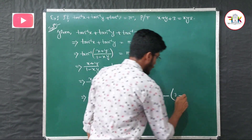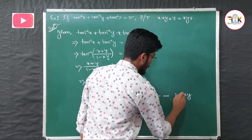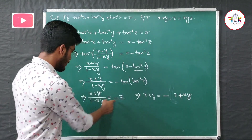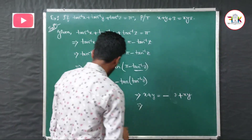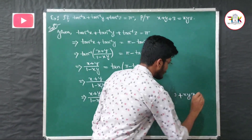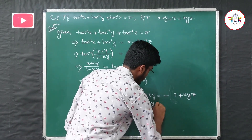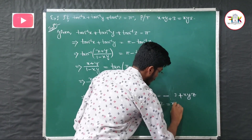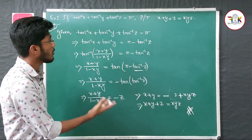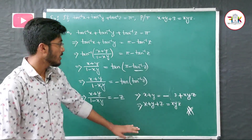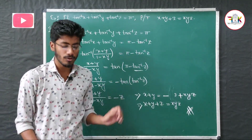Rearranging: x + y + z = xyz. And that is what we had to prove. So this is how we simply solve it. Now let's move to the next question.